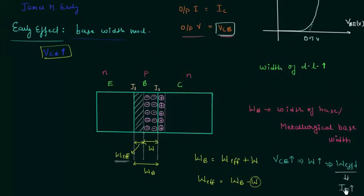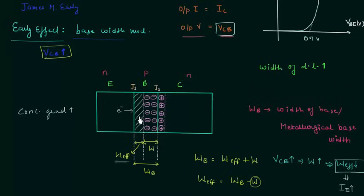This will increase the input current IE. The other reason is increase in concentration gradient because of decrement in W_effective. The concentration gradient is the main reason for the movement of charge carriers. The electrons on the N side will move towards the base because of concentration gradient. As the area is decreasing, the concentration will increase, and because of this more electrons will flow towards the base, which will also increase the input current IE.